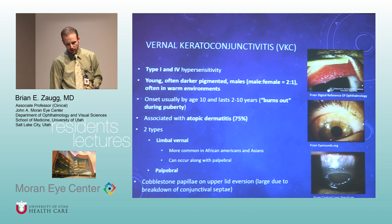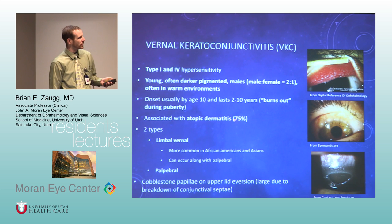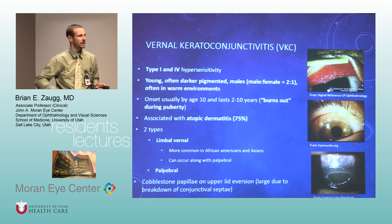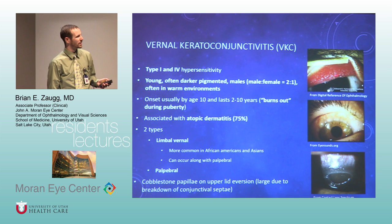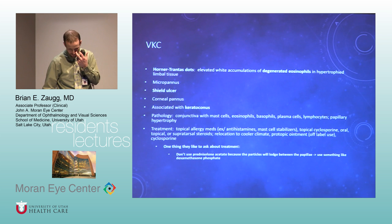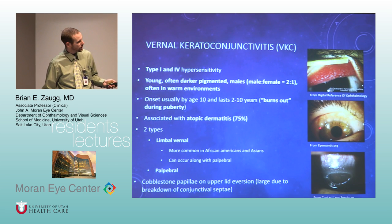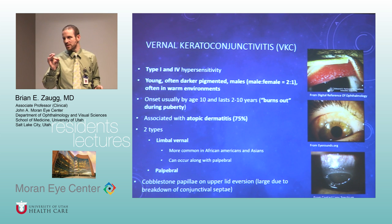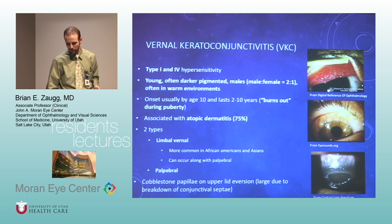VKC — we don't see it as much in Utah. The high association is with atopic dermatitis, and it usually gets better with age. They like to ask about shield ulcers, which are usually superior in the cornea underneath the lid. Look for cobblestone papillae on the upper eyelid. They also ask about Horner-Trantas dots — tiny elevated dots about 0.2 mm, seen 360 degrees around the limbus in VKC, though that's a pretty extreme case.